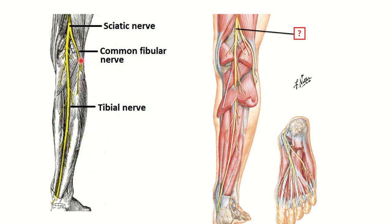The common peroneal nerve travels to the anterior and lateral compartments of the leg and supplies the muscles of those compartments. On the other hand, the tibial nerve passes through the posterior aspect of the leg and supplies all the muscles of the posterior compartment. The posterior compartment muscles are divided into two groups: superficial and deep. Here we can see the tibial nerve traveling down through the posterior aspect and finally reaching the plantar aspect of the foot, where it supplies the foot muscles.